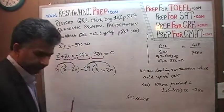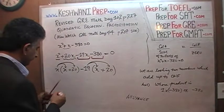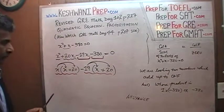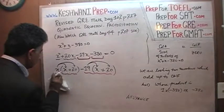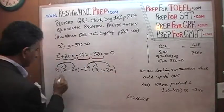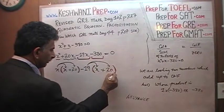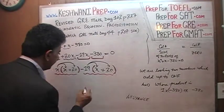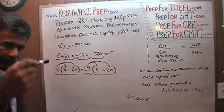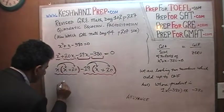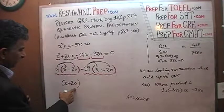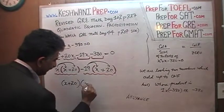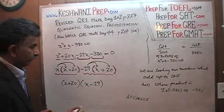Now, what is common between the first grouped part and the second grouped part? What's common is what we see in the parentheses — x plus 20. That is the common factor. We take out x plus 20. What we are left with from the first part is just x, and from the second part is negative 19. So the equation becomes (x plus 20) times (x minus 19) equals zero.